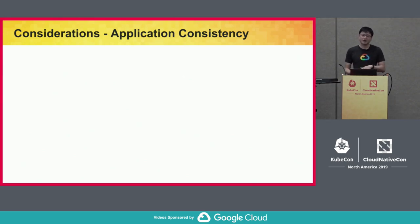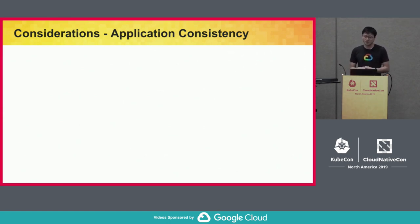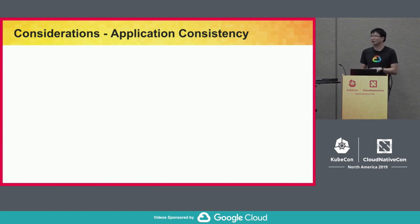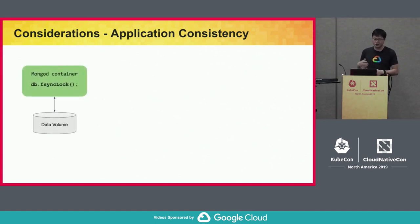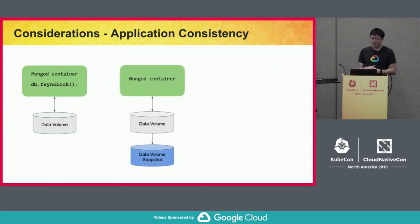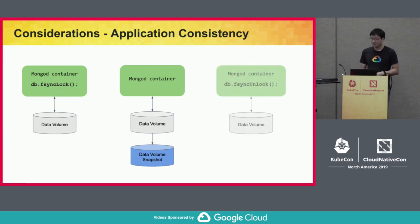Here's an example using MongoDB to illustrate application consistency. Assuming you have a MongoDB database running in your cluster and want to back it up: depending on the configuration, you may need to flush all writes and lock the database before doing a filesystem-level snapshot. The first step is to run db.fsyncLock to flush all writes and lock the database. While the database is locked, you take a data volume snapshot — making exact copies of all data files. After that, you run db.fsyncUnlock to unlock the database and resume normal MongoDB operation.